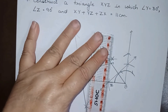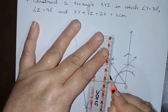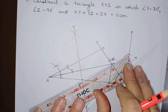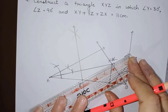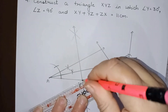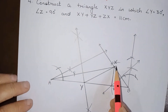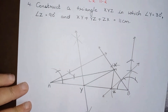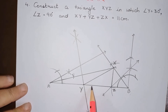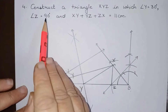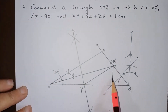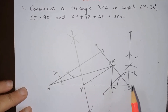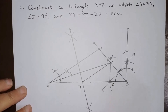Now our last step is to join XZ and XY. This gives us triangle XYZ. We can see that angle Y is 30 degrees — we can verify it using a protractor — and angle Z is 90 degrees, as shown. So XYZ is the required triangle. Let us now write the steps of construction.